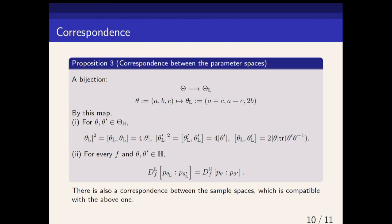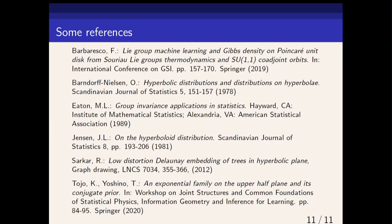Finally, there's a correspondence between the Poincaré distribution and the hyperbolic distribution. For this map you can rewrite the square of the Minkowski inner product. Then for every f-divergence and every two distributions with parameters θ, θ' in the Poincaré distribution or the Poincaré upper plane, you will have the f-divergence which is equivalent to the f-divergence between two hyperbolic distributions with equivalent parameters. So there's a nice correspondence between those two families defined on different models of hyperbolic geometry.